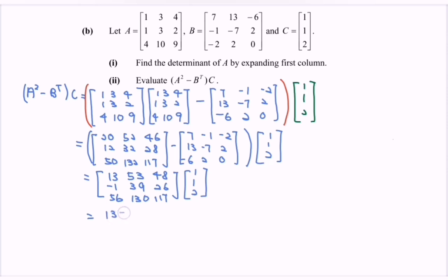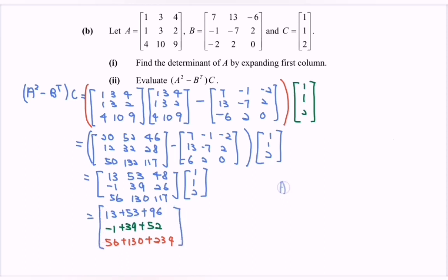Finally, multiplying by C, we get: 13 plus 53 plus 96 equals 162 for the first row; negative 1 plus 39 plus 52 equals 90 for the second row; and 56 plus 130 plus 234 gives 420 for the third row. So A squared minus B transpose multiplied by C equals the 3x1 matrix: 162, 90, 420.